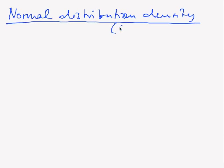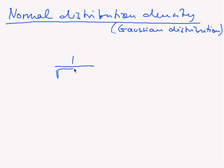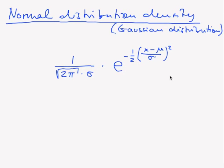To answer that, let's have a look at the density of the normal distribution, which is also termed the Gaussian distribution, and which is defined as 1 divided by the square root of 2π times σ times e raised to the power of minus one half times (x minus μ) divided by σ, squared. This is a density, meaning the integral over all possible values of x is 1.